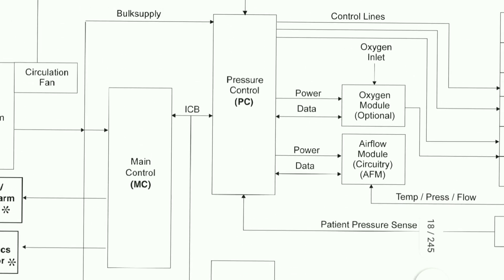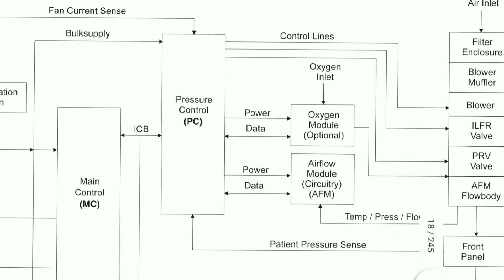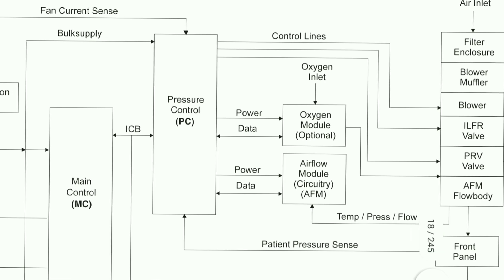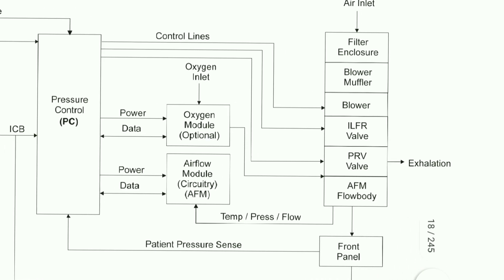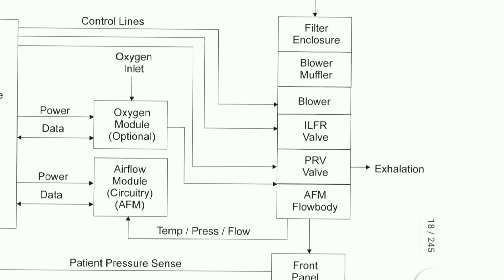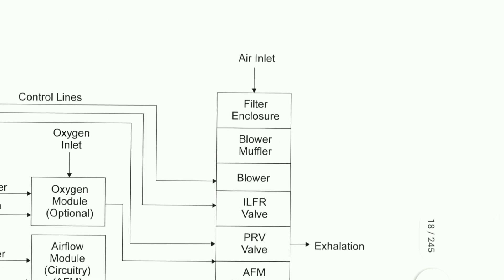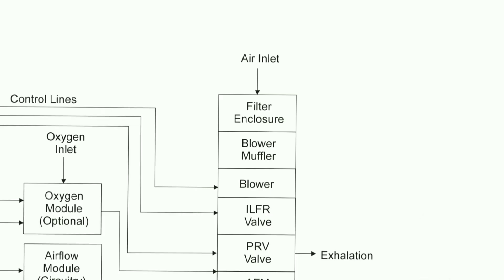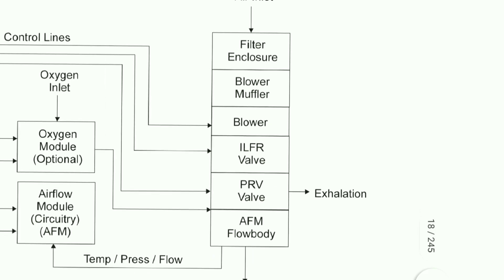The pressure control has control lines which go to the pneumatic system. The pressure control also has the oxygen module — optional — and the air module circuitry AFM, where power and data are given. We then come to the air inlet: from the air inlet there is the filter enclosure, blower muffler, blower, ILFR valve, then PRV valve, then AFM flow body.